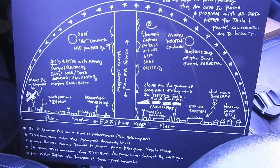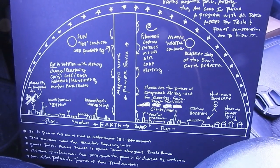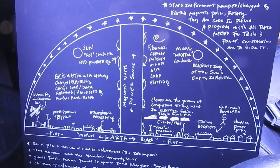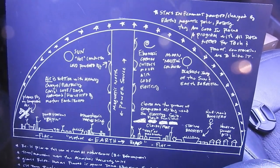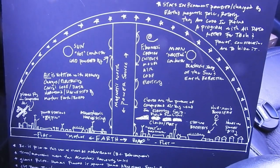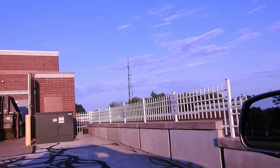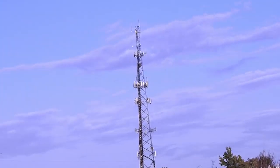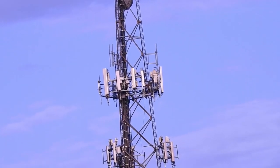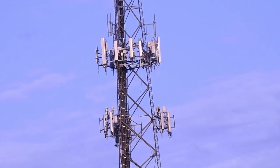Atmospheric energy harvesting — that's what Earth is set up for now. They don't power anything with fossil fuels. Everything's powered by the air. They're set up on Earth to harvest free electricity in the air, and that's what powers everything.